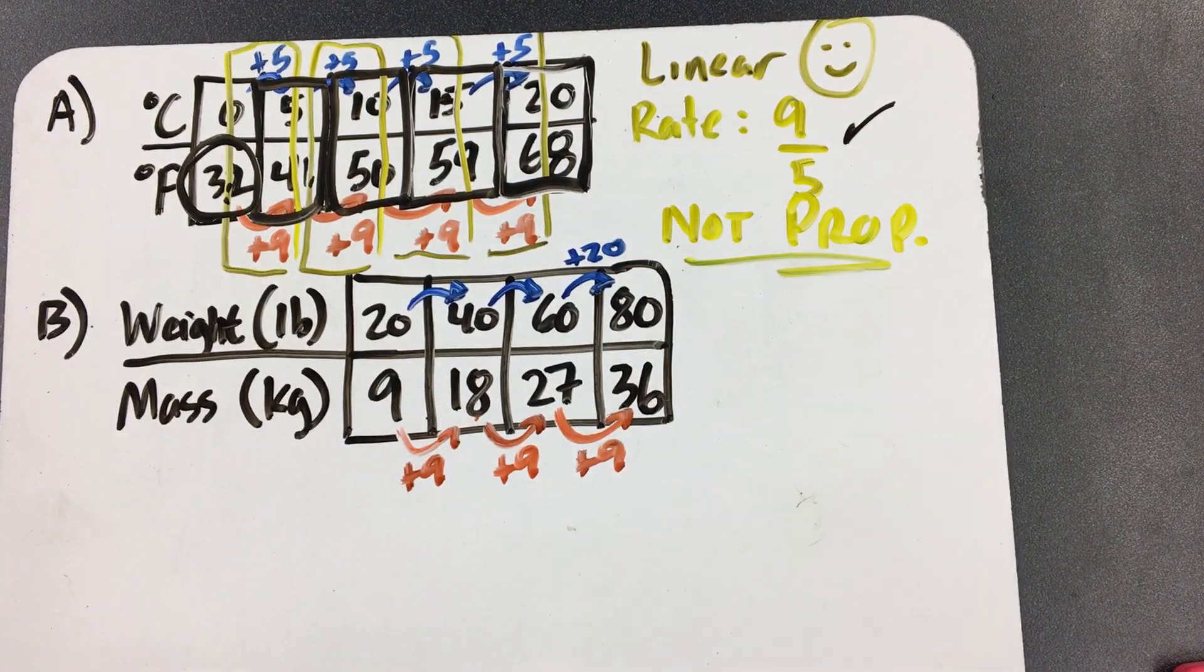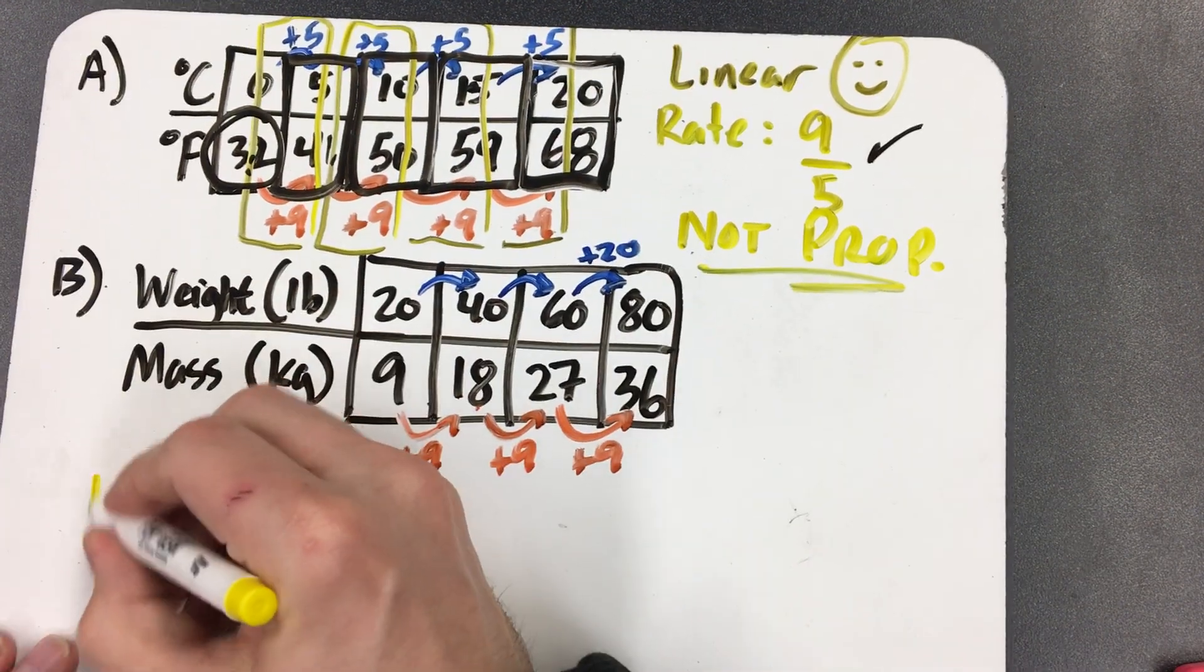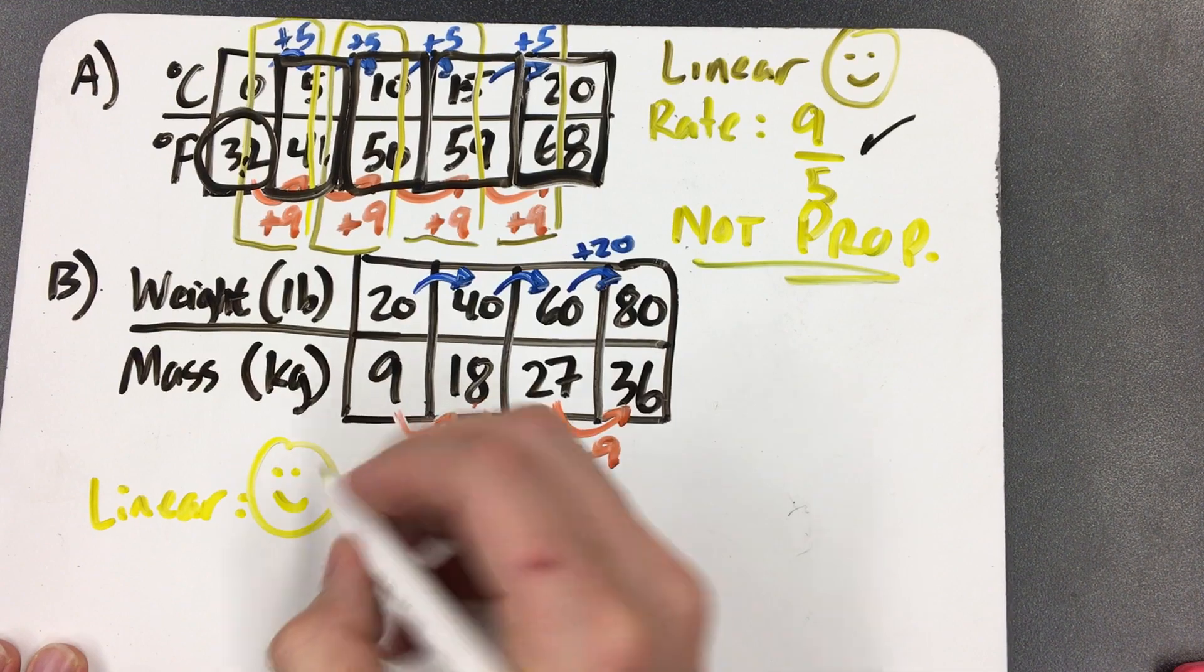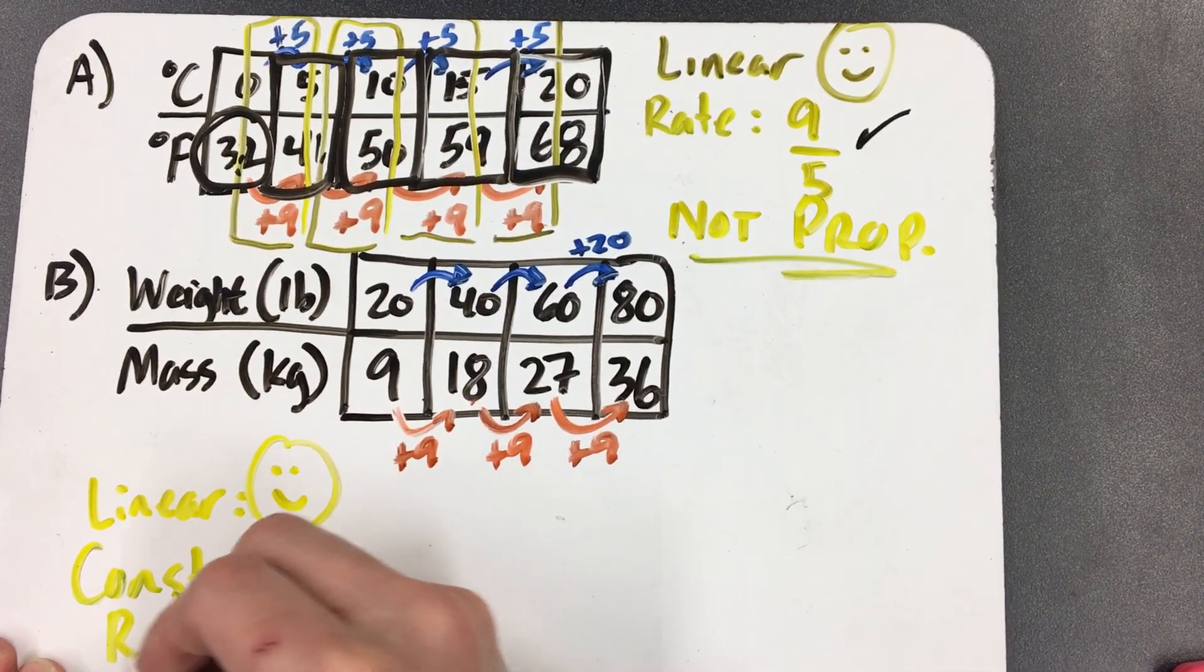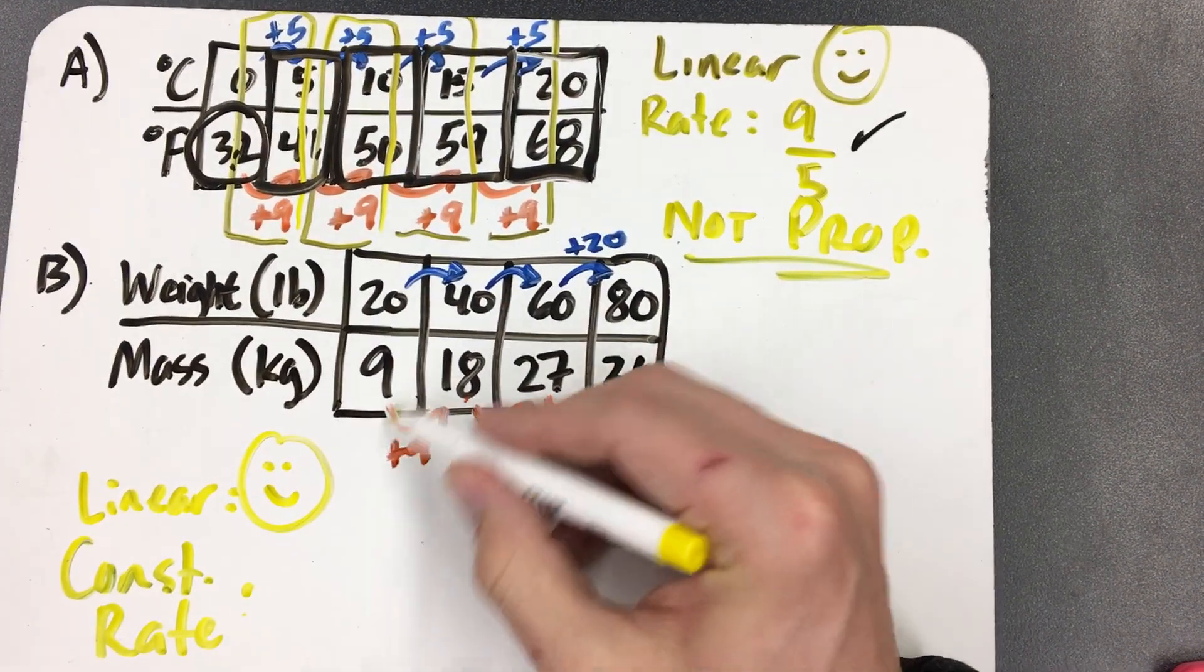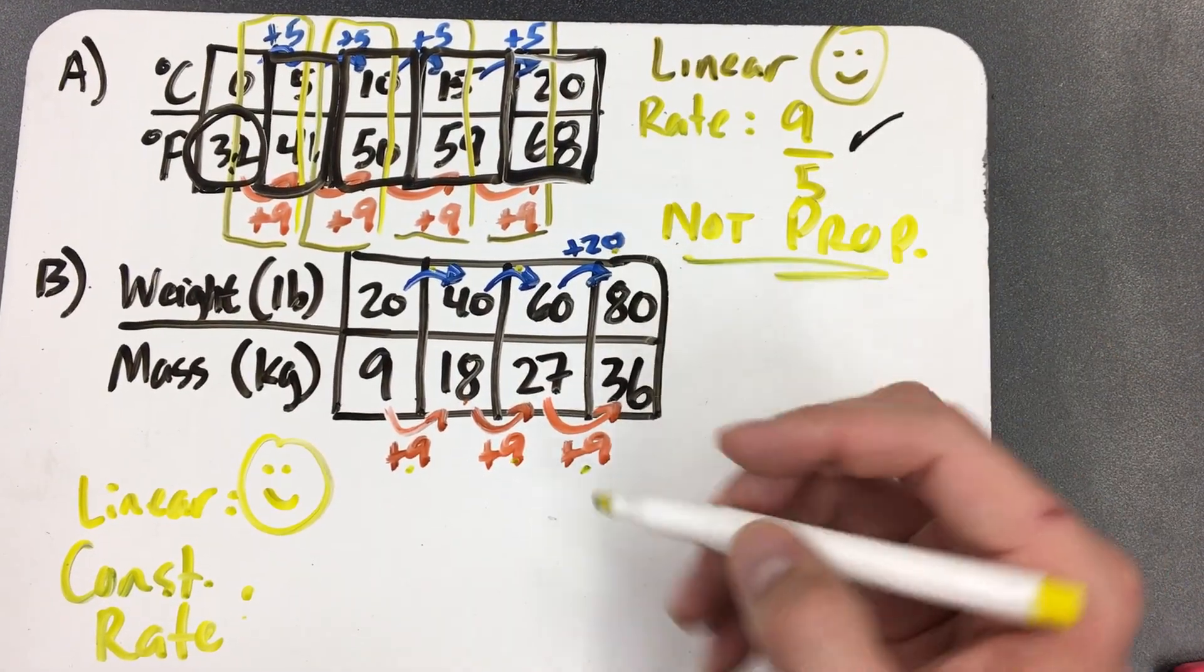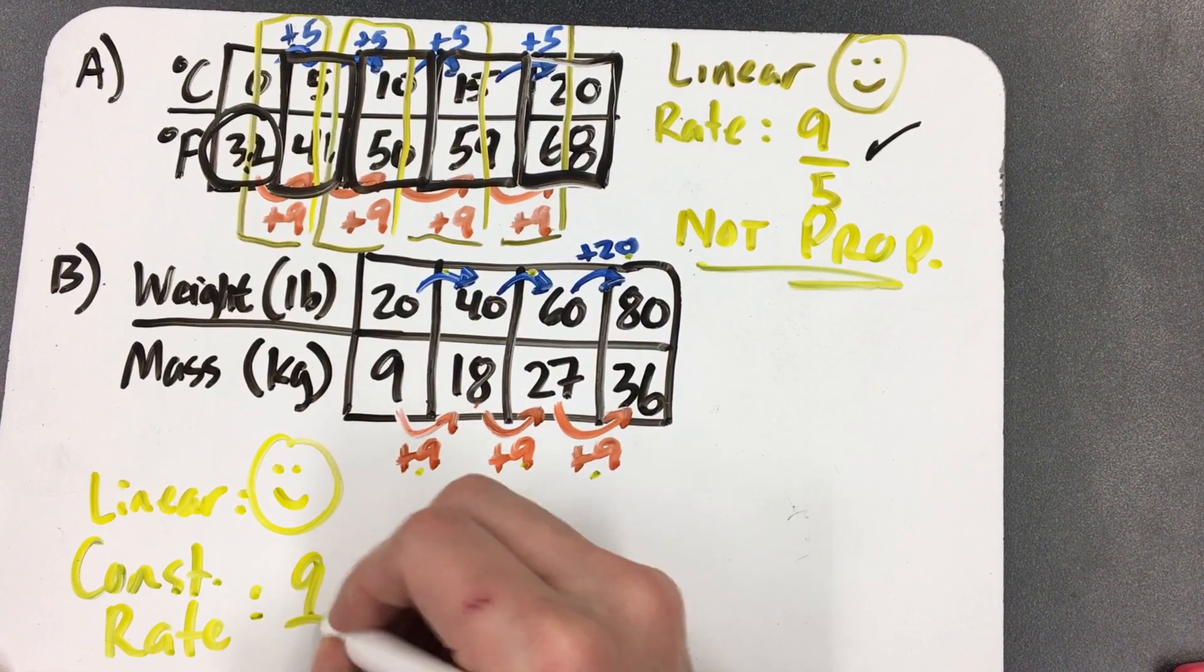So look what we have. Do we have a constant rate? Was it adding 20 every time up here? Yes. Was it adding 9 every time down here? Yes. So is this linear? Yes, this is linear. What is my constant rate? Remember, you take this number on the bottom first. 9 over 20. My constant rate is 9 over 20.